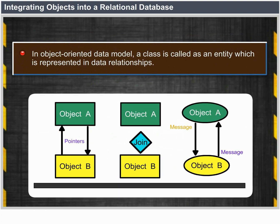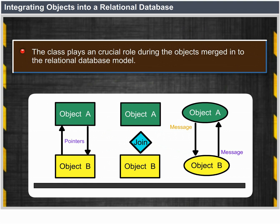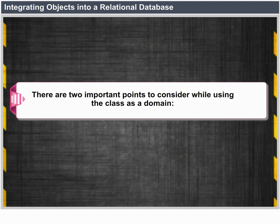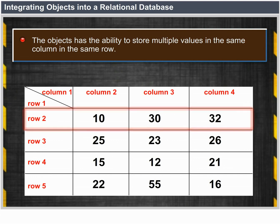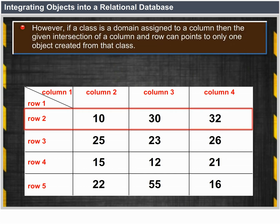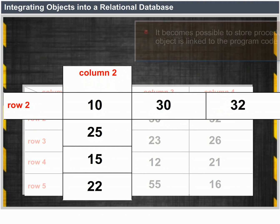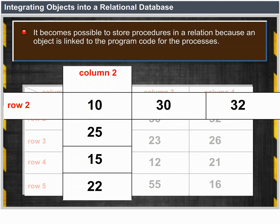In the object-oriented data model, a class is an entity — the element involved in data relationships. When merging objects into the relational data model, a class takes on an entirely different role: it becomes a domain, acting as the data type for a column. This makes it possible to store multiple values in the same column and row, because an object usually contains multiple values. However, if a class is a domain assigned to a column, any given intersection of a column and row can contain only one object created from that class. The relation therefore still conforms to the relational constraint of no multivalued attributes. It also becomes possible to store procedures in a relation, because an object is linked to the program code for the processes it knows how to perform.